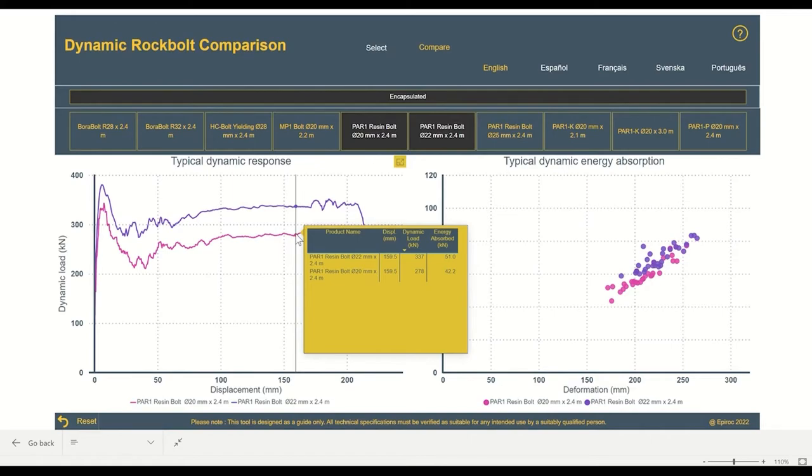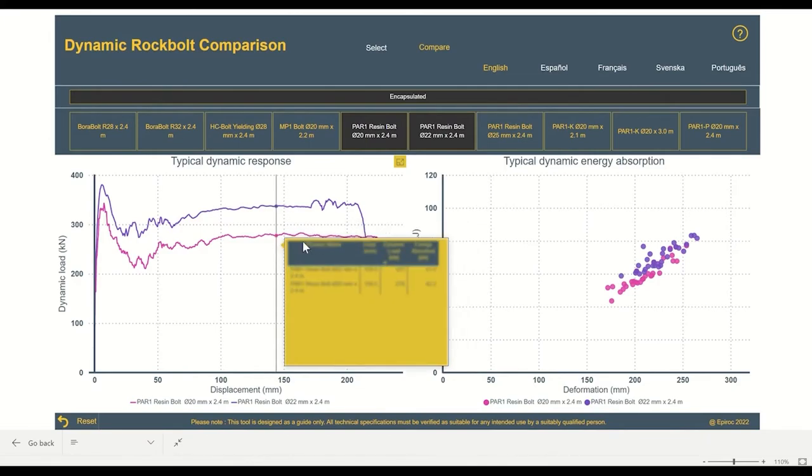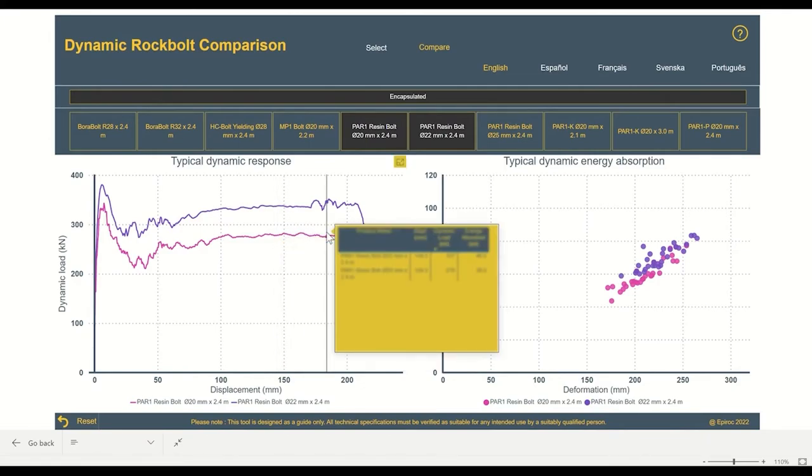And we're left with our graph for our 22mm and our 20mm bolt. If you hover on the graph, this little tooltip pops up, and it gives you an indication of the likely dynamic load at a particular displacement, as well as the energy that's been absorbed as the bar deforms.